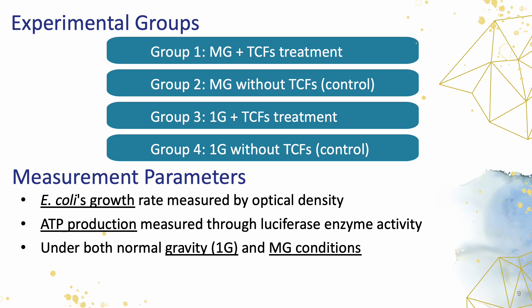As for our measurement parameters, we looked at a couple of key factors. Firstly, we assessed E. coli's growth rate using optical density measurements. Additionally, we measured ATP production through luciferase enzyme activity. ATP gives us an insight into the metabolic activity of the bacteria.